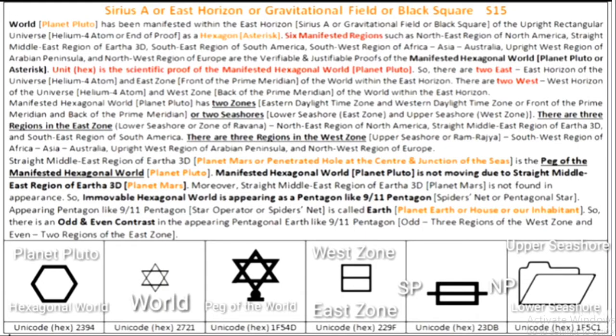World has been manifested within the East Horizon or Sirius A or Gravitational Field of the Upright Rectangular Universe. This is the hexagonal world. Six manifested regions and unit hex are the scientific proofs of the manifested hexagonal world. Manifested hexagonal world is called Planet Pluto. There are elliptical barriers between White Dwarf Companion Sirius B and Sirius A of the Sirius Binary System. These elliptical barriers are called canopies.